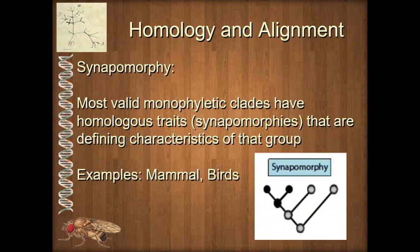A feature that is common to all descendants of an ancestor is called a synapomorphy. Technically, a synapomorphy is a derived ancestral trait that is shared between two or more species. Write that down and make note of it: a derived ancestral trait shared between two or more species is a synapomorphy.